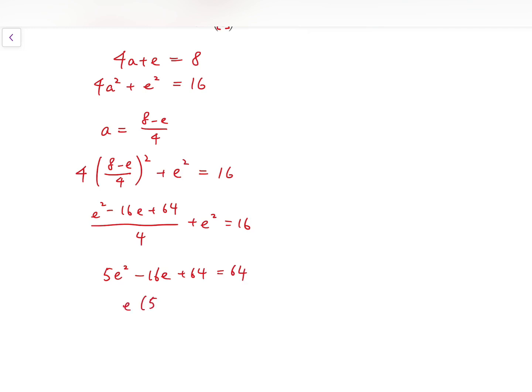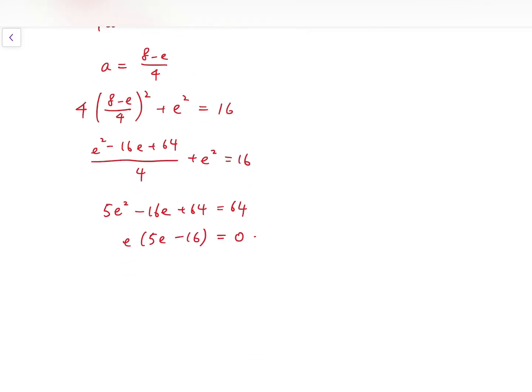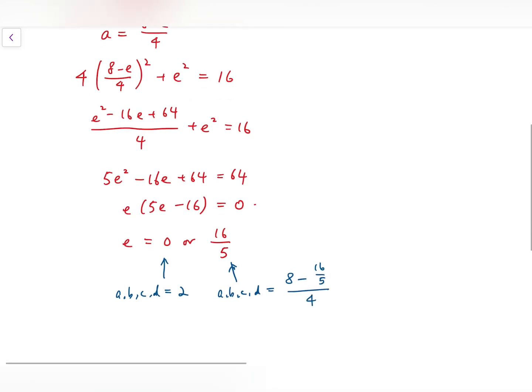So it's actually very easy. In that case, E is either 0 or 16 over 5. Then apparently, if we take E equals 0, then A, B, C, and D would all equal 2. While for this, they will all be equal to 8 minus 16 over 5, all divided by 4. And that's 6 over 5.